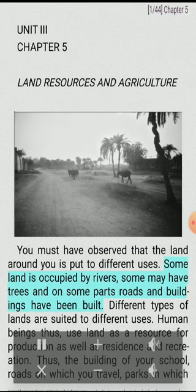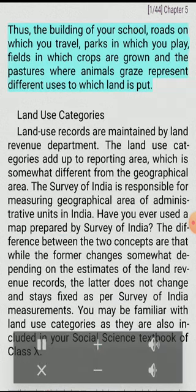You must have observed that the land around you is put to different uses. Some land is occupied by rivers, some may have trees, and on some parts roads and buildings have been built. Different types of lands are suited to different uses. Human beings thus use land as a resource for production as well as residence and recreation. The building of your school, roads on which you travel, parks in which you play, fields in which crops are grown, and the pastures where animals graze represent different uses to which land is put.